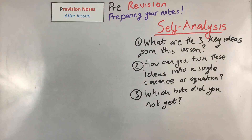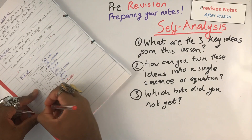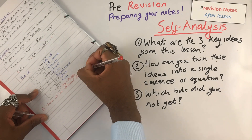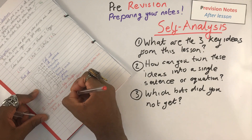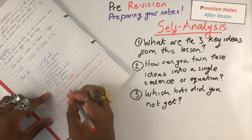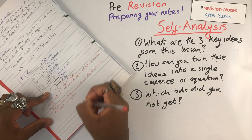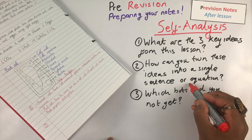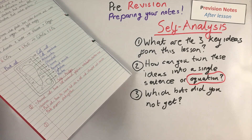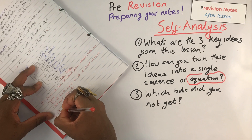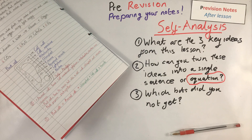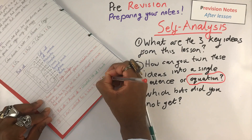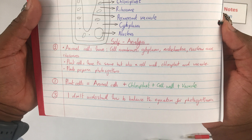Ask yourself and then answer these three questions. What were the three main key ideas from the lesson? How can I turn these three points into a single sentence or equation? And which bits did I not understand? For my example, for number one, I've got: animal cells have cell membranes, cytoplasm, mitochondria, nucleus and ribosome. Plant cells have the same structures as animal cells, including a cell wall, chloroplast and a permanent vacuole. Plant cells perform photosynthesis. For the second point, I'll show you how I can turn some of these ideas into an equation: plant cells = animal cells + chloroplast + cell wall + vacuole. For the last point, on the thing I didn't really understand, I wrote down that I didn't get how to balance the equation for photosynthesis. Make sure your teacher is aware of it so they can give you the correct help.